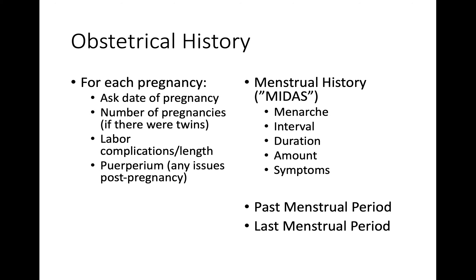For each pregnancy, you have to ask when the pregnancy was — usually just a year, but some mothers know more specifically. Ask about the number of fetuses, for example if there were twins. You want to know how her labor was, if there were complications, and how long it lasted. Then ask about any issues postpartum.